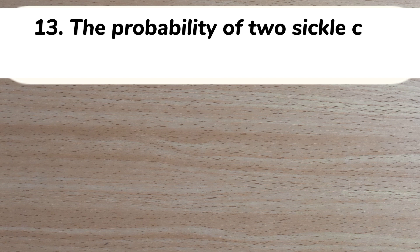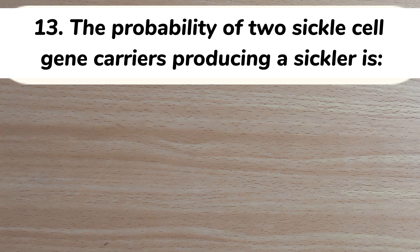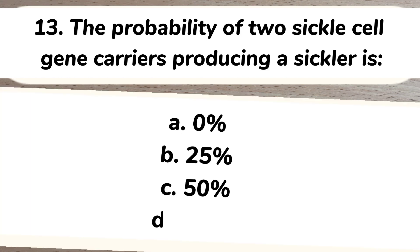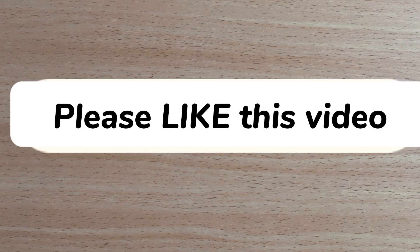Number thirteen: the probability of two sickle cell gene carriers producing a sickler is A) 0%, B) 25%, C) 50%, D) 100%. Answer: B) 25%. Please give me a thumbs up if you're gaining something from this video.